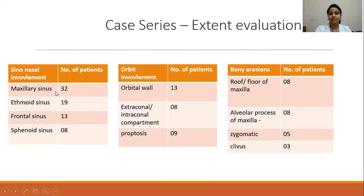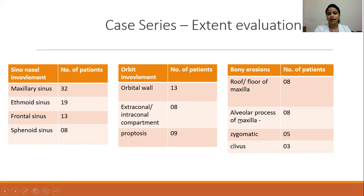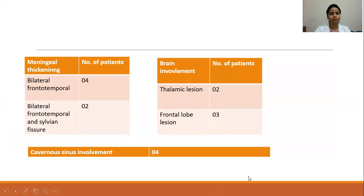Regarding sinonasal involvement: maxillary sinus was involved in 32 patients, ethmoid sinus in 19, frontal sinus in 13, and sphenoid sinus in 8. Orbital wall involvement was seen in 13 patients, extraconal-intraconal compartment in 8 patients, proptosis in 9 patients, roof and floor of maxilla in 8 patients, alveolar process of maxilla in 8 patients, and zygomatic bone in 5 patients. Clivus was involved in 3 patients. Meningeal thickening in the bilateral frontotemporal area was seen in 4 patients, sylvian fissure involvement in 2 patients, thalamic lesion in 2 patients, frontal lobe lesion in 3 patients, and cavernous sinus involvement in 4 patients.